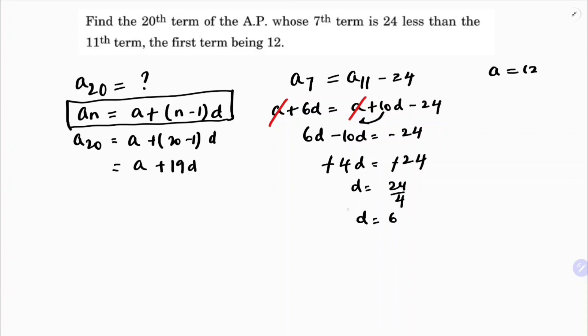The value of d is 6 and a is 12. Substitute into the formula: 12 + 19 × 6.